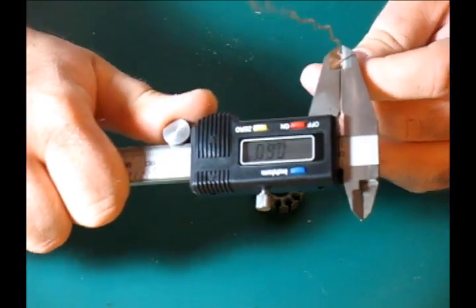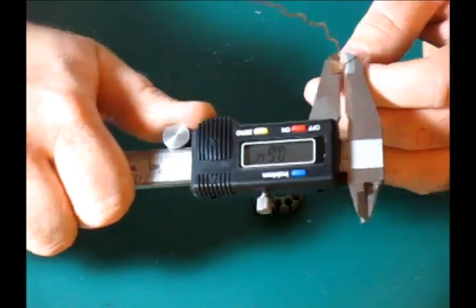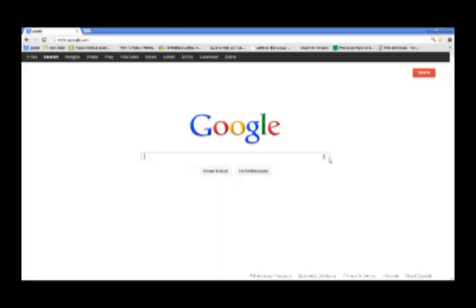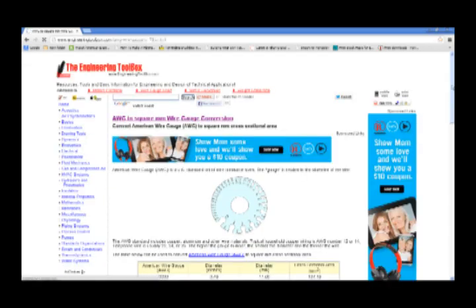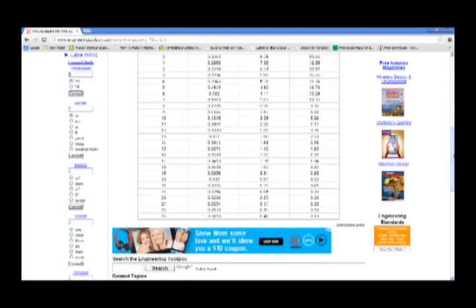To determine what gauge wire you need, use a pair of digital calipers to get your wire diameter. Do a quick Google search for millimeter to wire gauge conversion, and it will show you what wire gauge you need to use. And again, be sure that it's enameled wire.